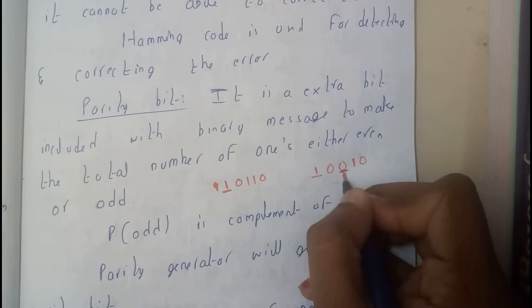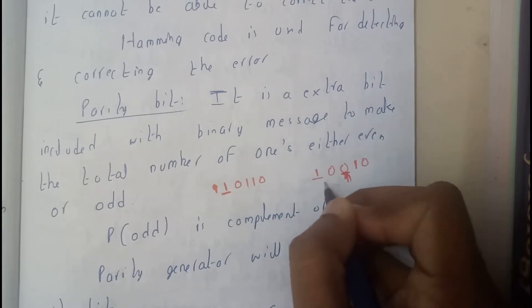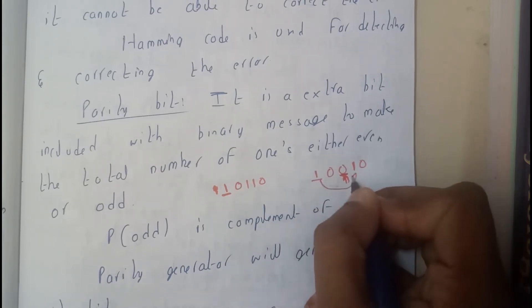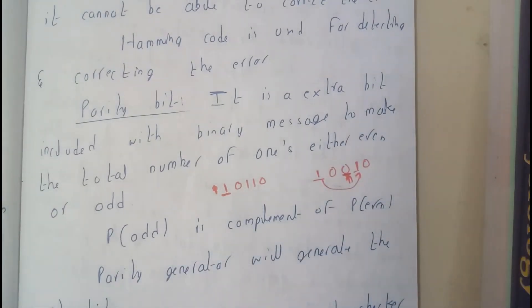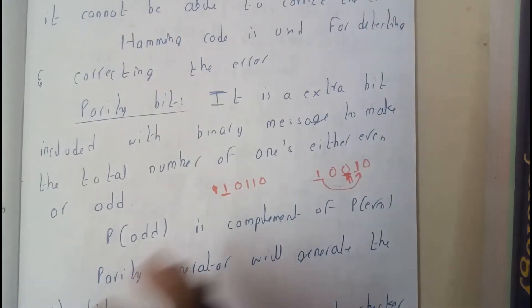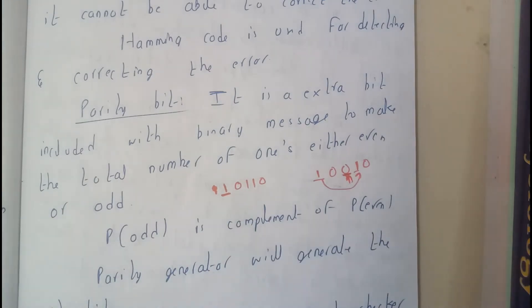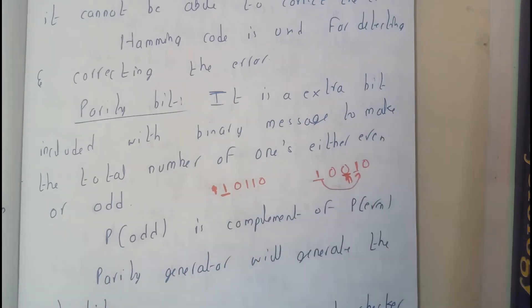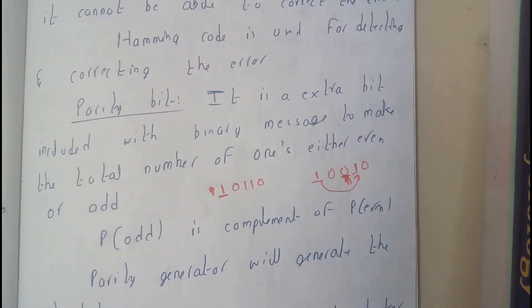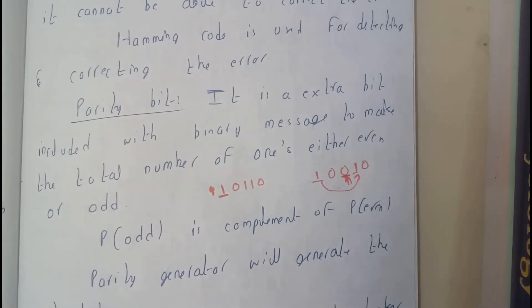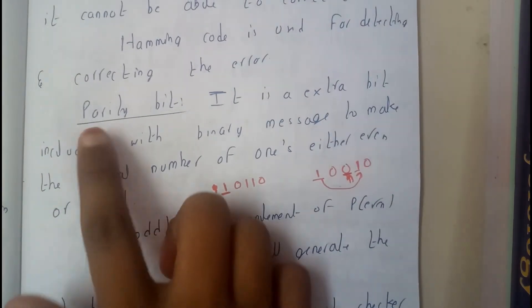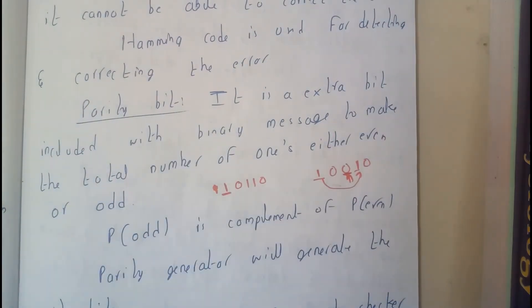Let us assume that here it is one, and somewhere it became zero — the update is done. So now it has become even bits. We can easily identify that there is an error in this code.